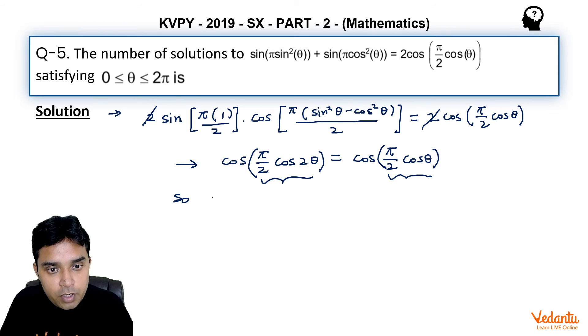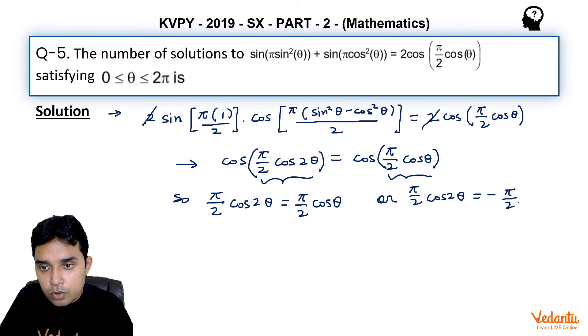Here we should have this π/2 cos 2θ equal to either π/2 cosθ, or this π/2 cos 2θ will be equal to -π/2 cosθ.